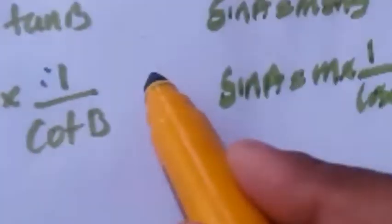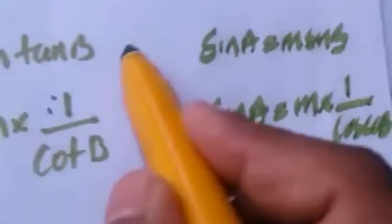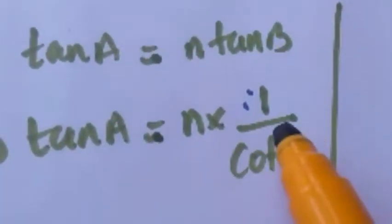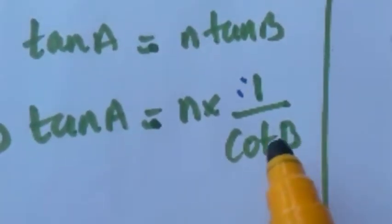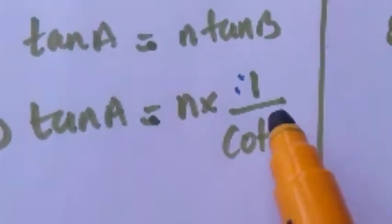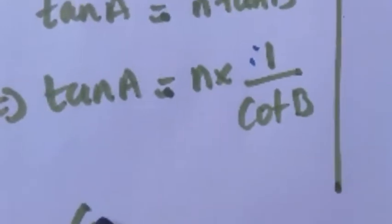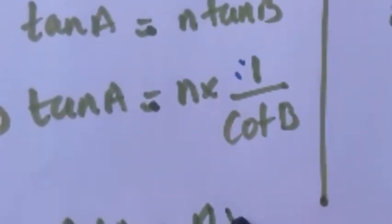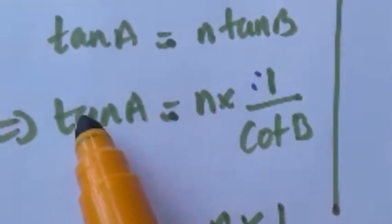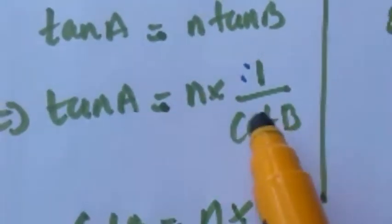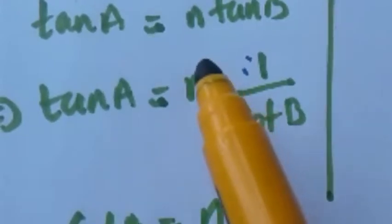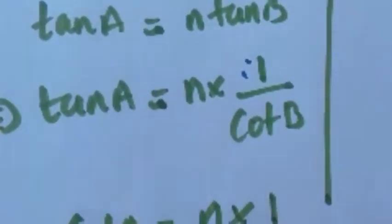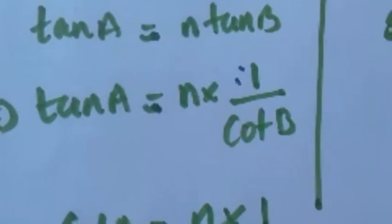From that, sin A is equal to m into sin B. Since sin is the inverse of cosec, sin B can be written as 1/cosec B. This is your first expression and this is your second expression, both derived from the two given things. From the first expression, can you derive an expression for cot B? Cot B you just take to the left side — since it is in the denominator, when you take to the left side it becomes cot B, and n/tan A remains on the right side.